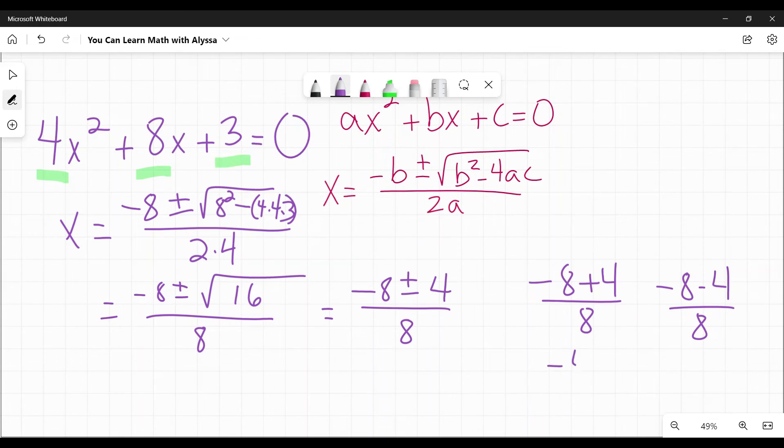Negative eight plus four is negative four over eight, which simplifies down to a negative one half. And negative eight minus four is negative 12 over eight, which simplifies down to a negative one and one half. So my final answers are that x is equal to negative one half and negative one and one half. And I've solved it.